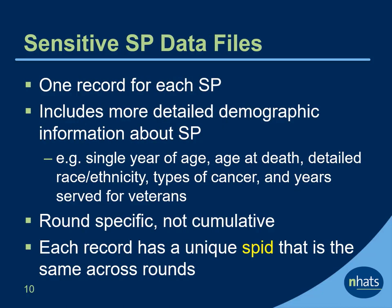The sensitive SP data files include one record for each SP in the current round. The files include more detailed demographic information about the SP, including their age in single years, age at death, detailed race and ethnicity, types of cancer, and details for veterans about time served. Just like the public SP files, the sensitive SP files are round specific and not cumulative, and each record has a unique SP ID that is the same across rounds.